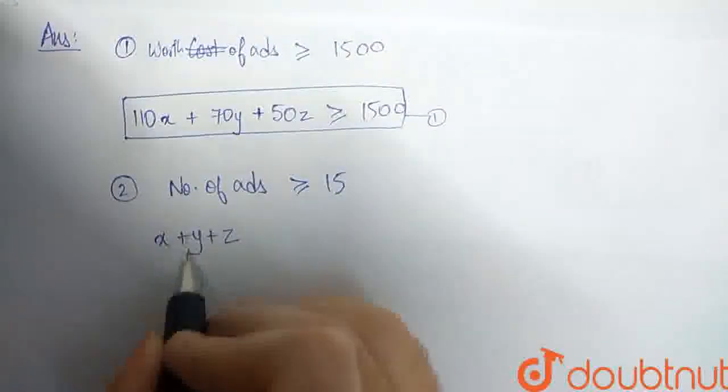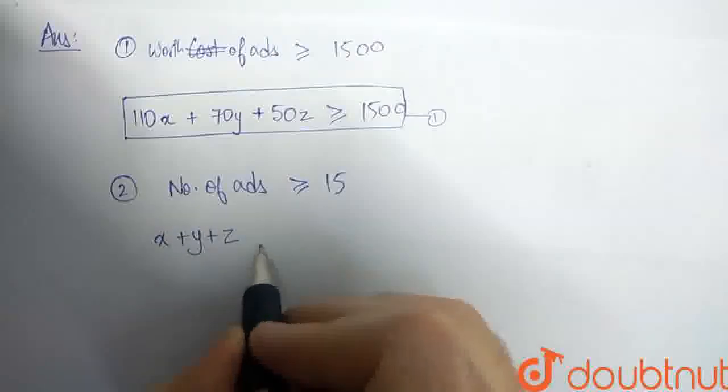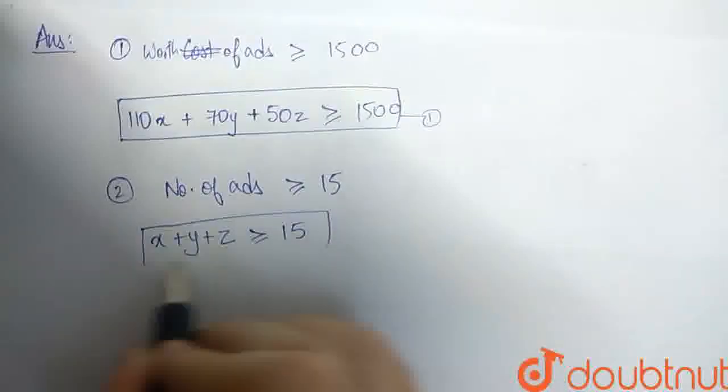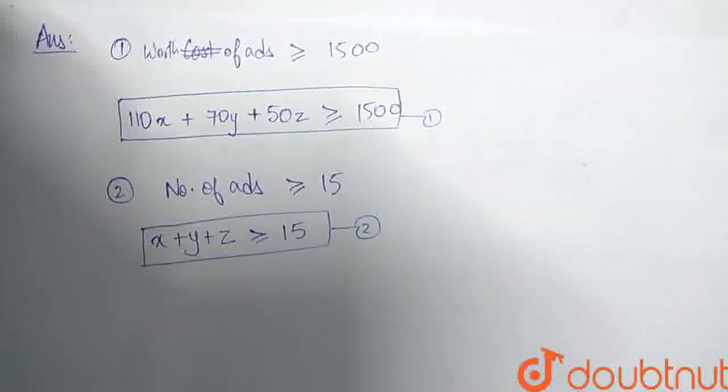Full-page ads, half-page ads, and quarter-page ads. So, their numbers add up to make the total number of ads, and that must be greater than or equal to 15. This gives us the second inequality.